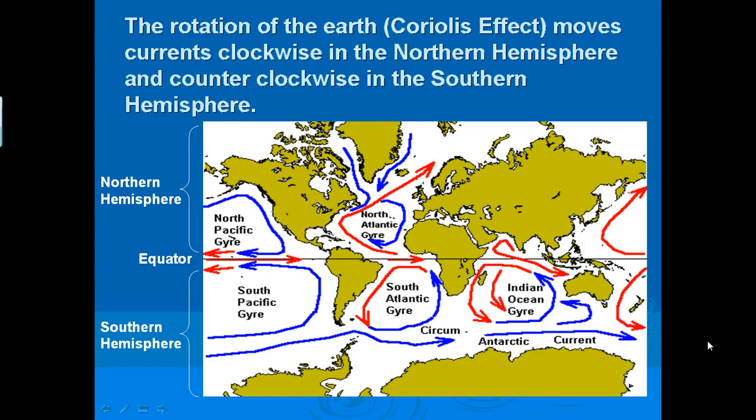The rotation of the earth, remember that's the Coriolis effect, moves currents clockwise in the northern hemisphere and counterclockwise in the southern hemisphere. So if you look at our diagram, you see the equator's going across the middle. The northern hemisphere is at the northern part of the picture and the southern hemisphere is at the southern part of the picture. You'll see that the currents are going and moving in opposite directions. Some are moving counterclockwise and some are moving clockwise.